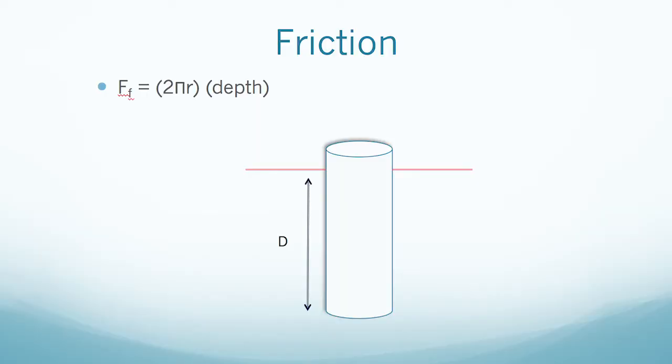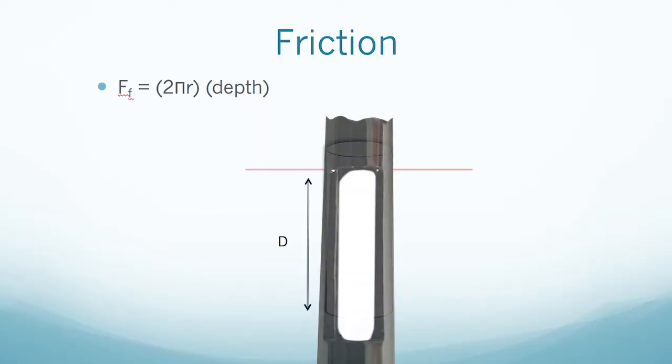So what's new? Well, first: reduced resistance. As a punch enters the skin, resistance begins to increase along the margins of the circumference of the punch. Opening the window reduces surface area and thus resistance. Resistance is proportional to the circumference of the punch and the depth of penetration.